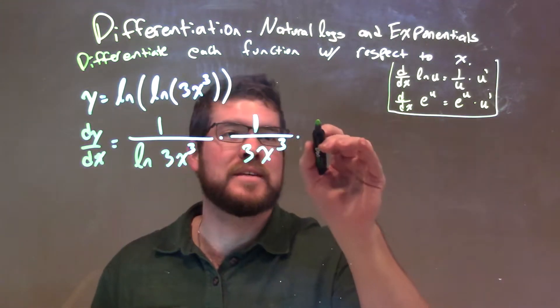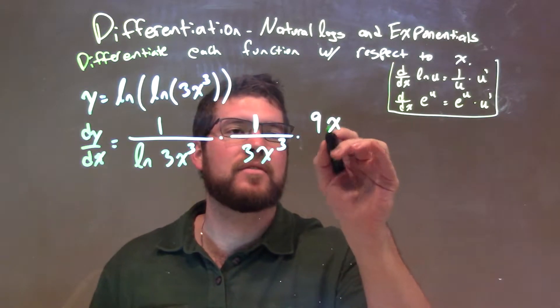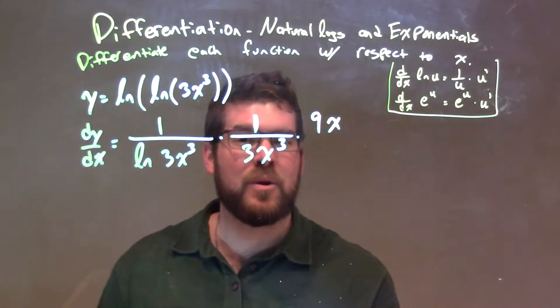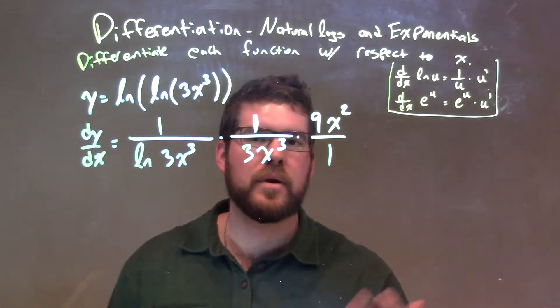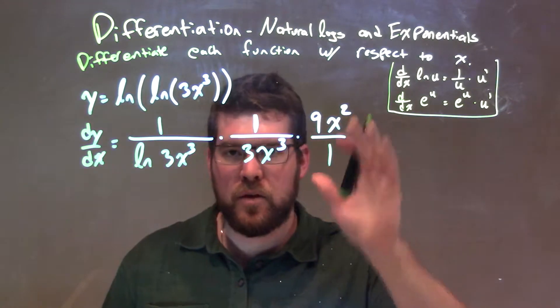3 comes down, 3 times 3 is 9, and we have x. Let's subtract the exponent by 1, which gives us x squared. We can put it over 1 to help maybe see it a lot nicer, but there we have it. We've taken the derivative.